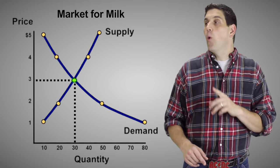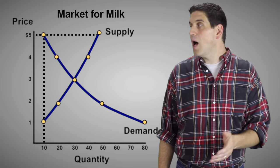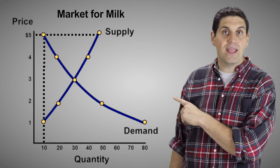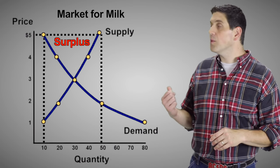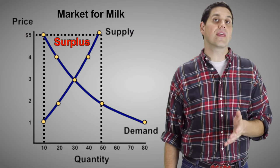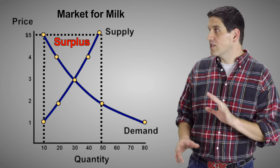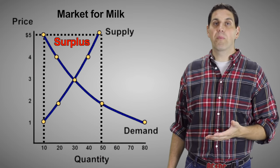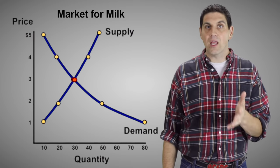But what if we're at disequilibrium? What if the price is way up here at $5? The quantity demanded is only going to be 10 gallons — when the price goes up, people don't want to buy as much milk. But when price goes up, producers want to produce more milk, and the quantity supplied is going to be 50 gallons. The result is something called a surplus. A surplus is when the quantity supplied is greater than the quantity demanded. In this case, it's 40 gallons — the 50 gallons produced minus the 10 gallons actually bought. Unless there's government involvement, a surplus is going to eventually fix itself. Producers will put the milk on sale and lower it down to the equilibrium price.